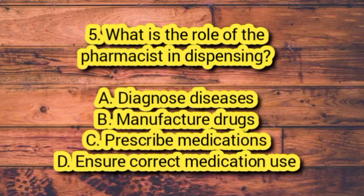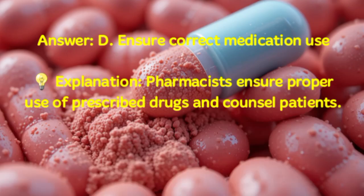Number 5. What is the role of the pharmacist in dispensing? A. Diagnose diseases. B. Manufacture drugs. C. Prescribe medications. D. Ensure correct medication use. Answer: D. Ensure correct medication use. Explanation: Pharmacists ensure proper use of prescribed drugs and counsel patients.